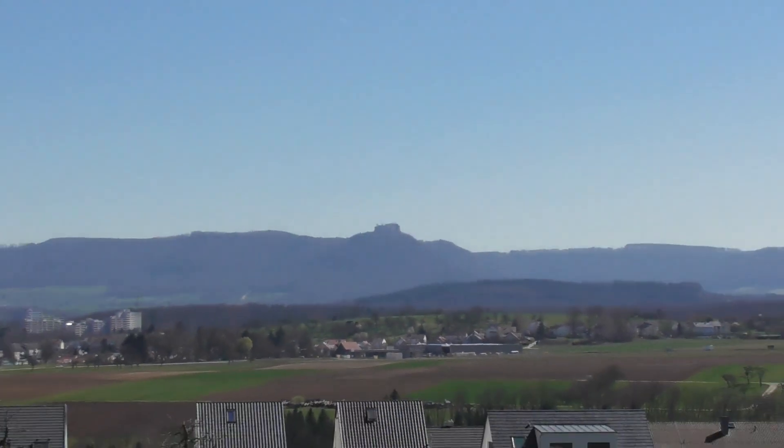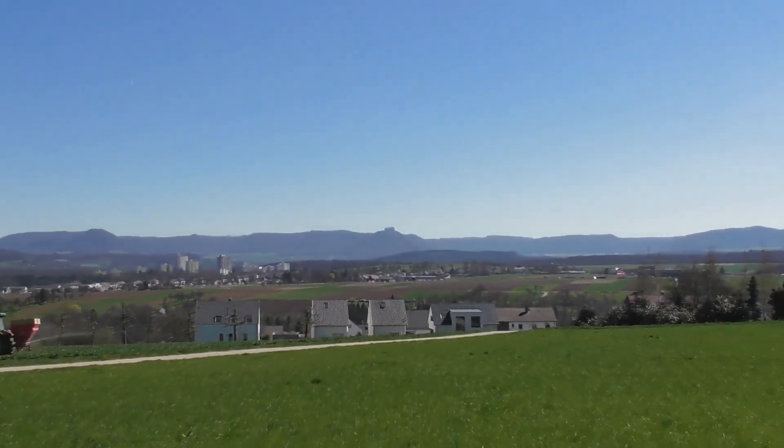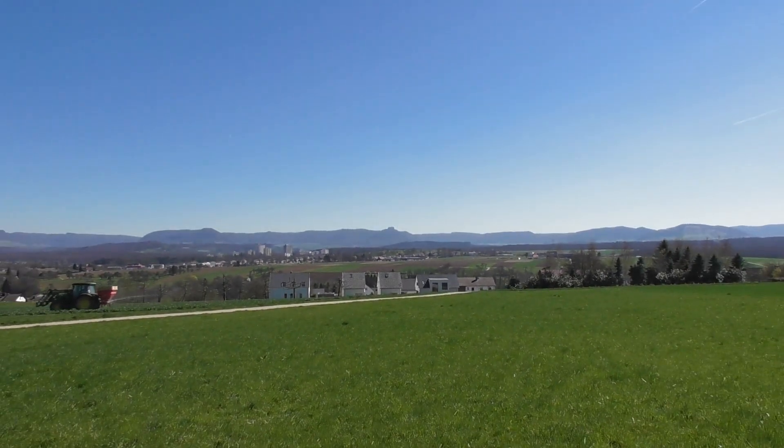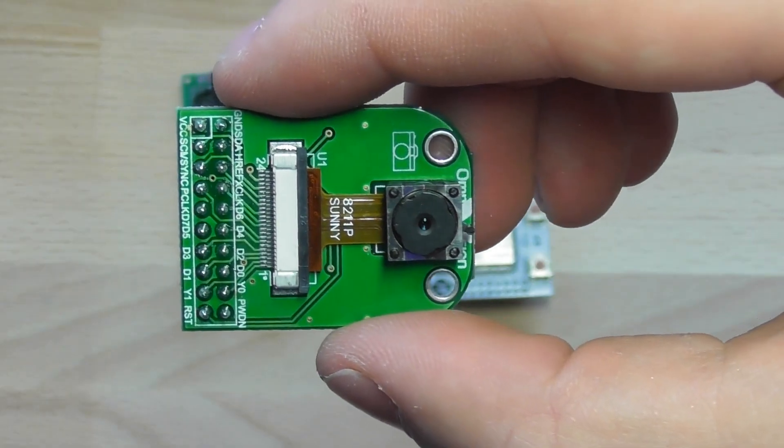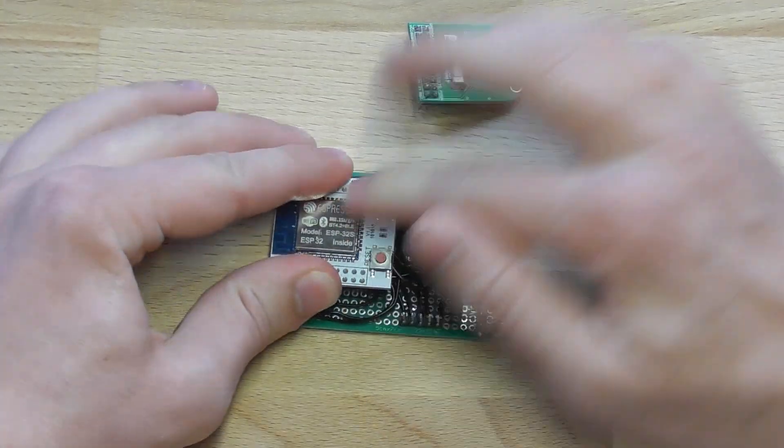This is Hohenäufen Castle, about 10 km away from where the camera is at. And this here is an ESP32, connected to a cheap OV2640 camera module.